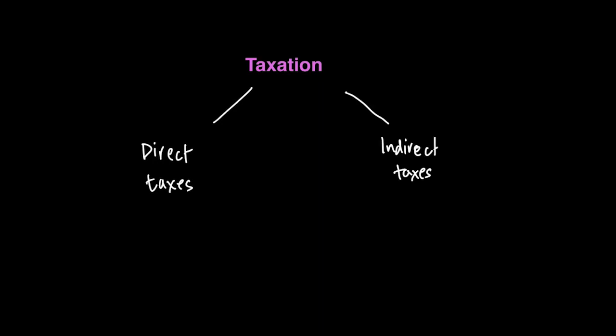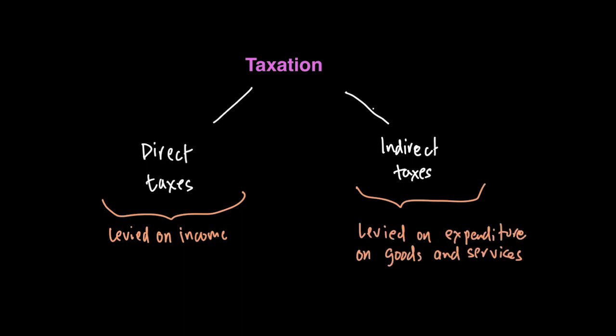Direct taxes is basically one which is levied on the incomes of individuals and firms and may include taxes on inheritance, taxes on income or corporations, and so on. On the other hand, indirect taxes are levied on goods and services or expenditure on goods and services. They are therefore like sales tax or value-added tax, which is levied on people's expenditure whenever they buy goods and services.